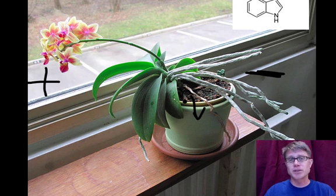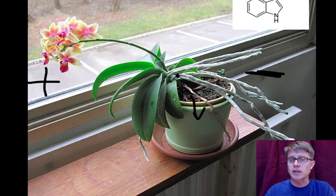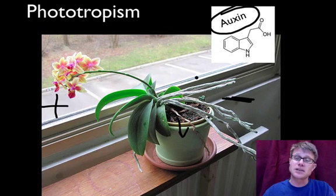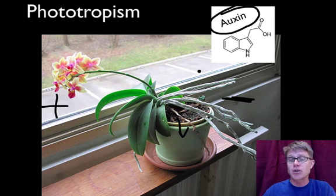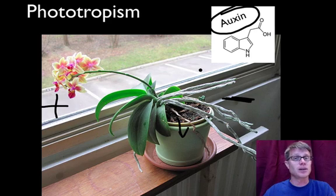We also have gravitropism, which is a response to gravity. But how does a plant do that? It doesn't have muscles, it doesn't have nerves. How does it grow towards or away from the light? Well, they use a plant hormone called auxin. Auxin is a series of plant hormones — hormones in general are chemicals that move around an organism and have a specific effect. What auxin does is it causes cells to lengthen.